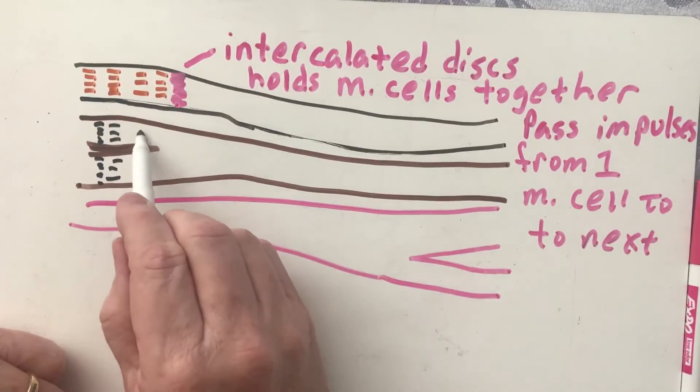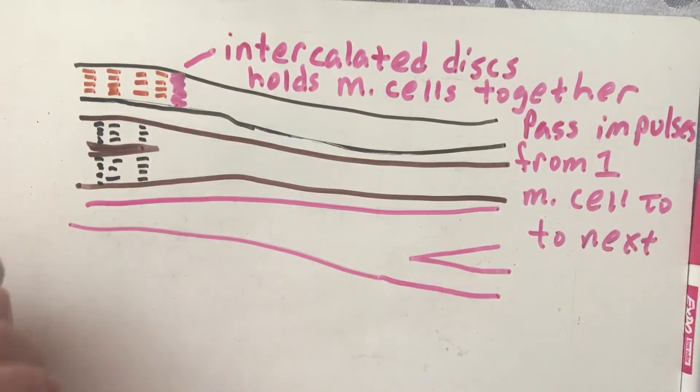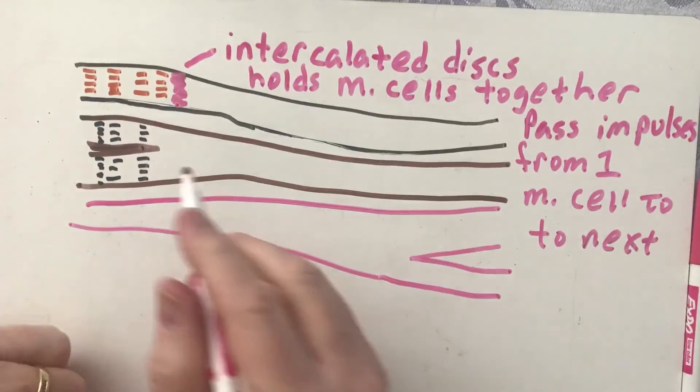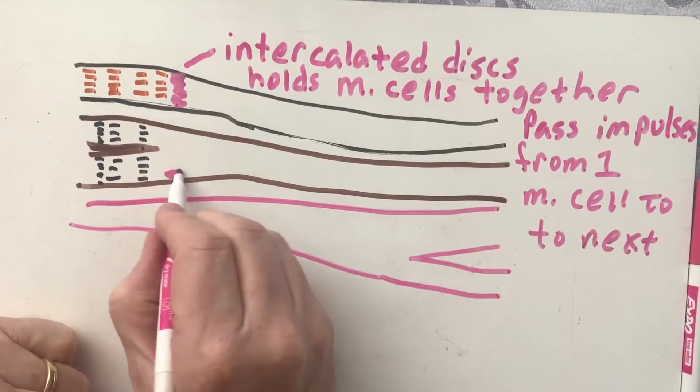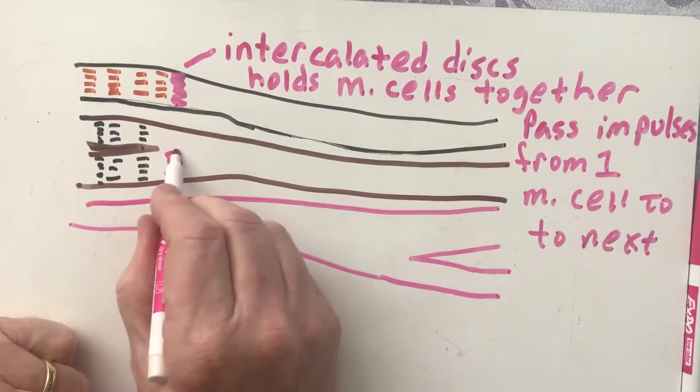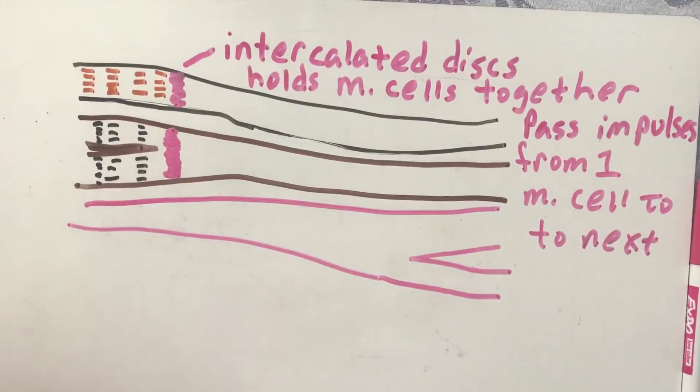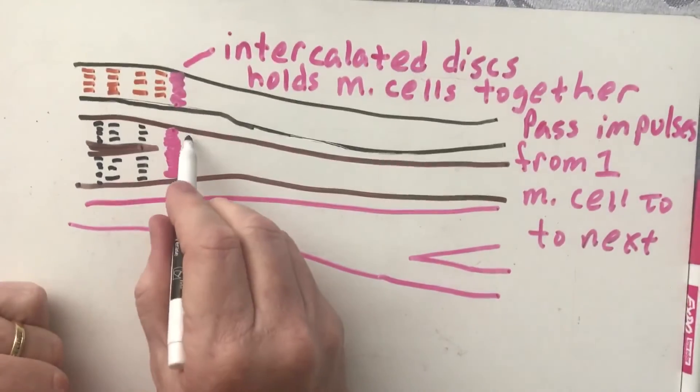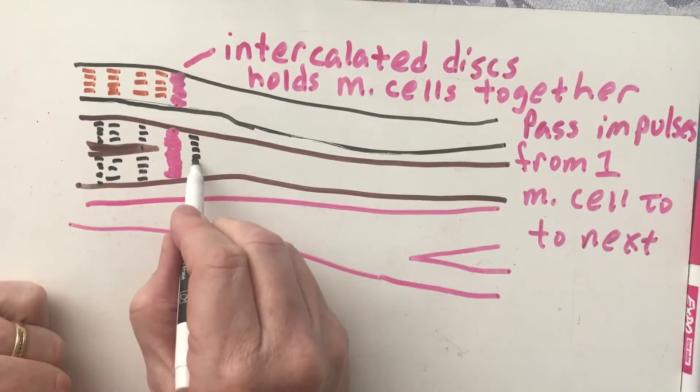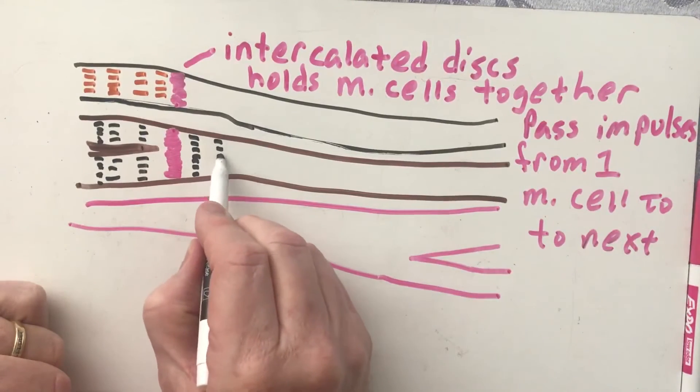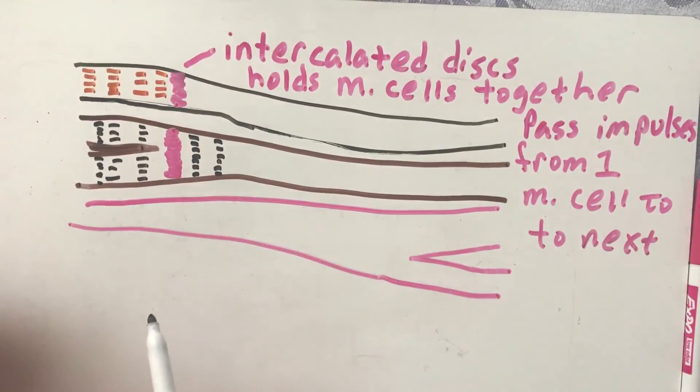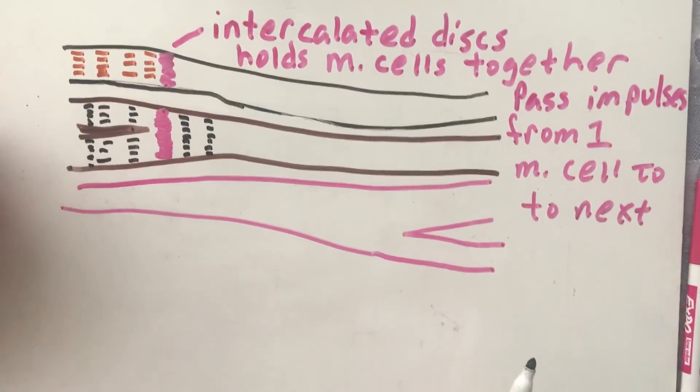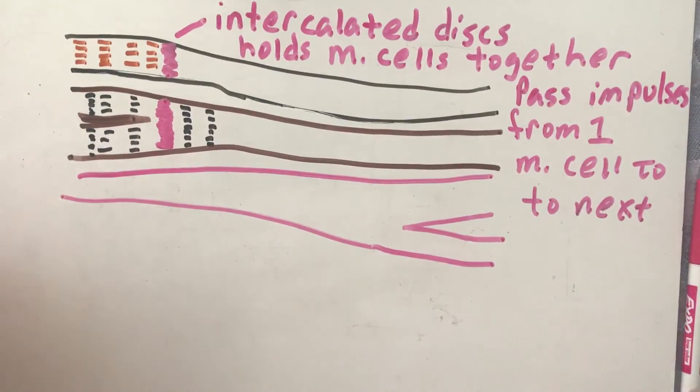And remember, the striations are made up - the dark part is made up of thick filaments which are myofibrils, the thin part is made up of actin. And then let's go ahead and put, being that we're using brown and black, this is going to be my intercalated disc again. And then I would have more striations.